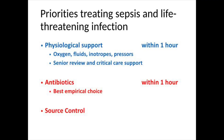This brings me to our priorities for treating sepsis and life-threatening infection. The Sepsis 6, which I'm not covering in detail here, focuses on the first two: physiological support — oxygen, fluids, and if necessary inotropes and pressors — senior review, and critical care support if patients are not responding, all within a priority window of one hour of recognising sepsis. Antibiotics — your best empirical choice depending on the clinical setting — also within an hour. But I think inadequately stressed in guidelines is source control. If your patient is not doing well, look: is there an underlying focus that needs to be physically dealt with to gain control?